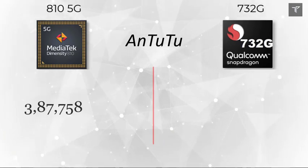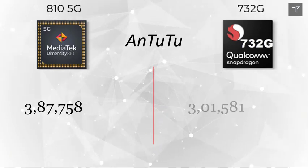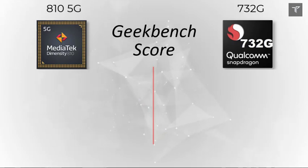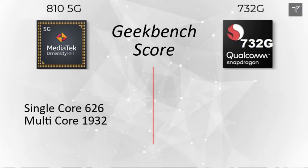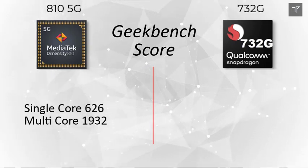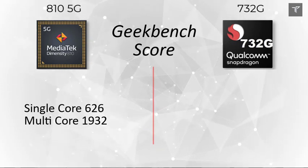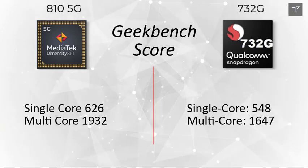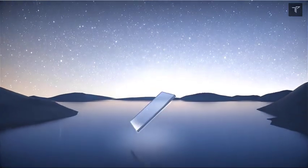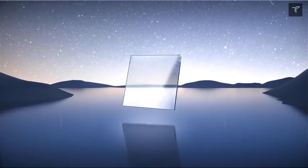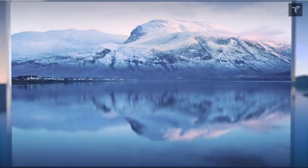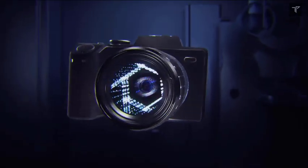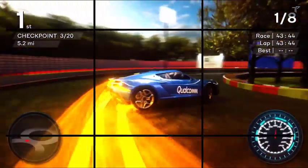Wrapping up with benchmark scores, the MediaTek Dimensity 810 crushes the Snapdragon 732G on AnTuTu with a score of around 387,000 compared to the Snapdragon. On Geekbench, the Dimensity 810 achieves a single-core score of 626 and a multi-core score of 1,932, representing a 10 to 20 percent improvement over the Snapdragon 732G. Overall, the MediaTek Dimensity 810 is the better processor — whether for 5G connectivity, GPU performance, or overall performance.